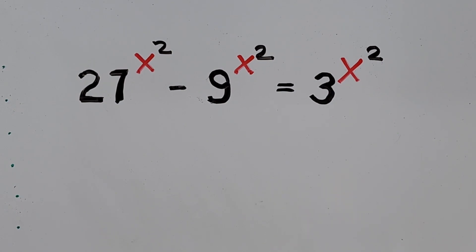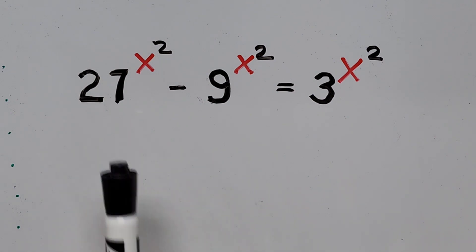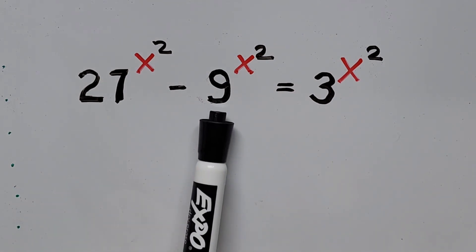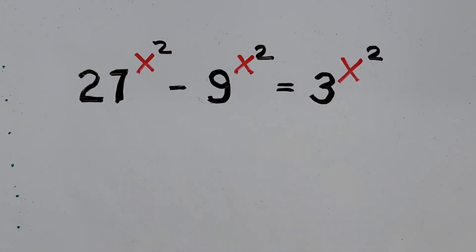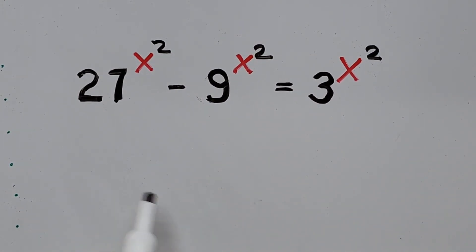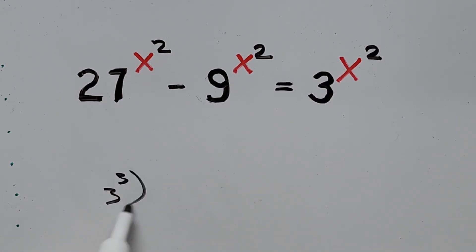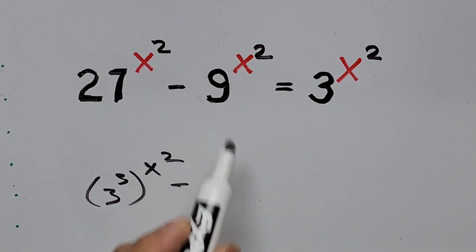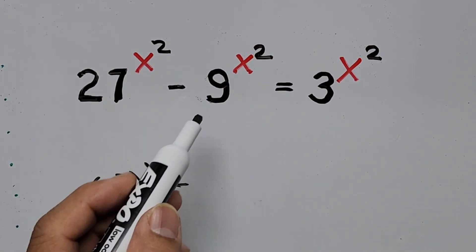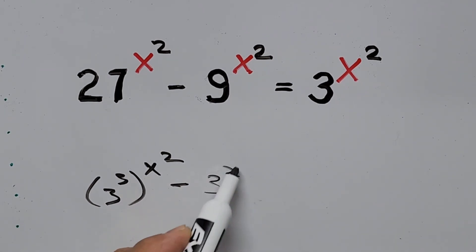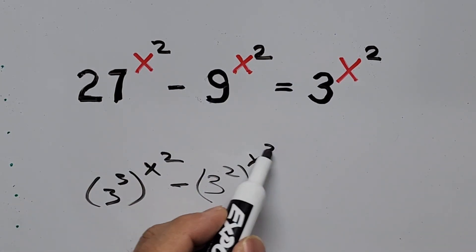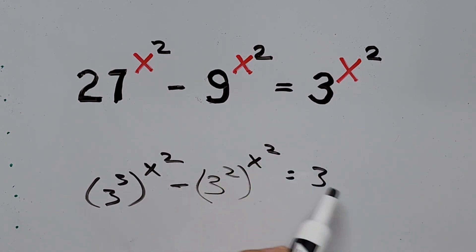In this video I'll be using the substitution method to solve for the value of x. Before we do that, if you notice all the bases have similarities, so they can all be converted to a base of 3. So 27 can be written as 3 cubed to the power of x squared, and 9 can be converted to base 3 as 3 squared raised to the power of x squared, all equal to 3 to the power of x squared.